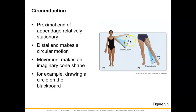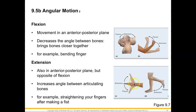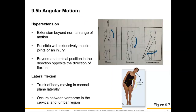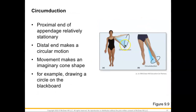Circumduction happens at the proximal ends of our appendages, where the distal end makes a circular motion. It is achieved through four movements: flexion, extension, adduction, and abduction. Think of different types of waves at a party — there are flexion-extension wavers, abduction-adduction wavers, and then the circumduction wavers who use all four movements together. This can also be done with our lower limb.